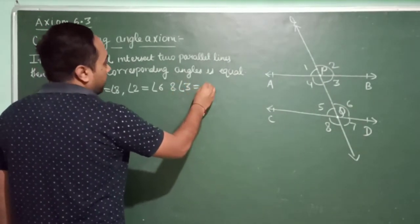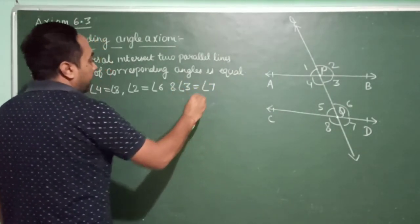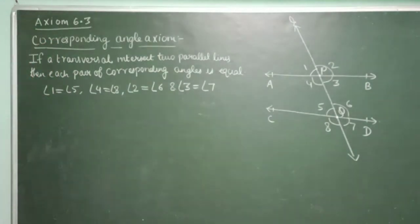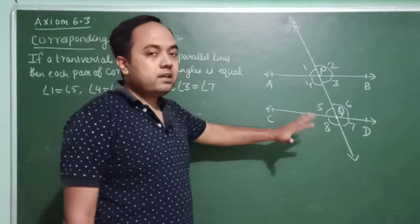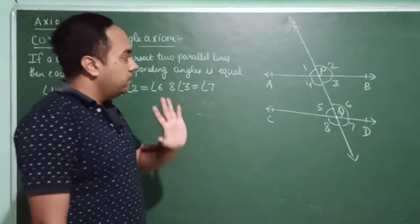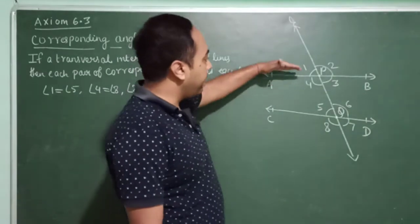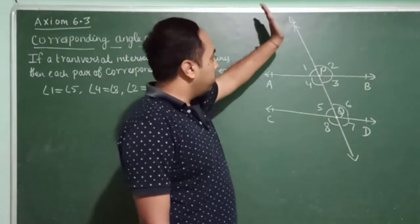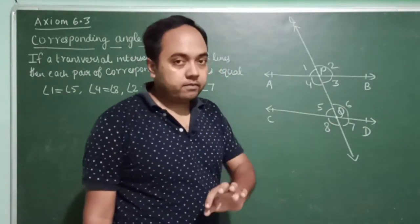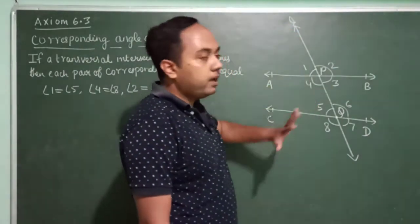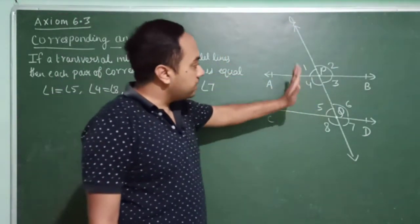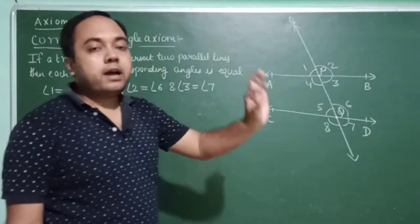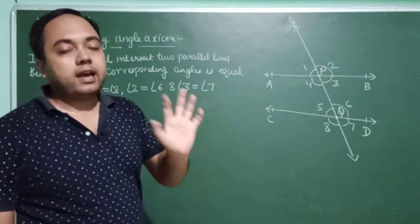So this is the Corresponding Angle Axiom. The statement is: if a transversal intersects two parallel lines, then each pair of corresponding angles is equal. If you have two parallel lines, the corresponding angles can be seen to be equal by this axiom.